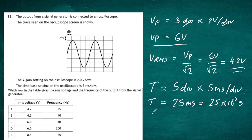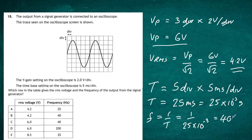Frequency equals 1 divided by the period, so it's 1 divided by 25 times 10 to the minus 3, giving an answer of 40 hertz. The V-RMS is 4.2 volts and the frequency is 40 hertz, so the answer to Question 18 is B.